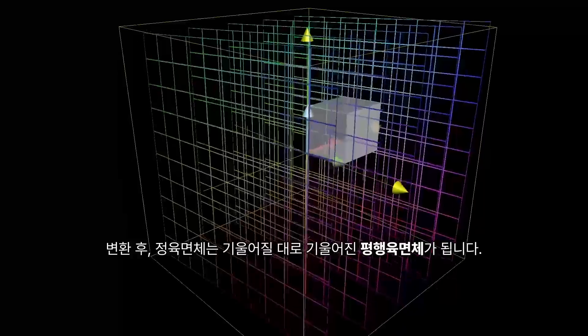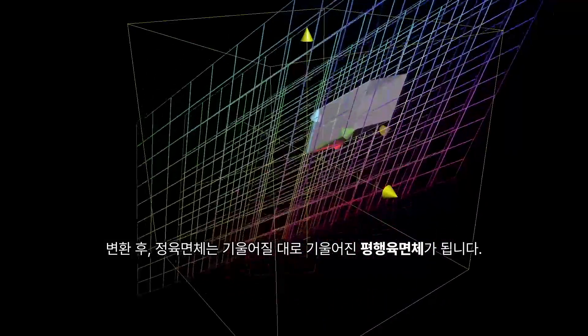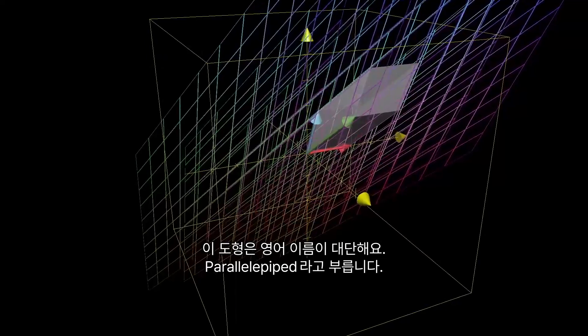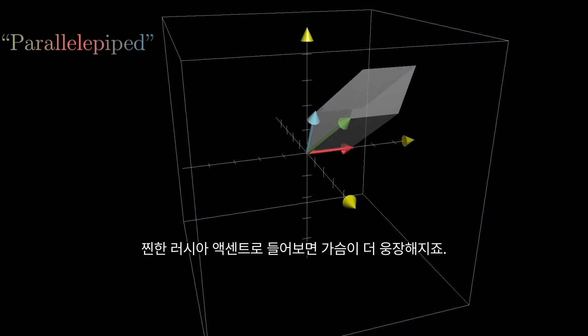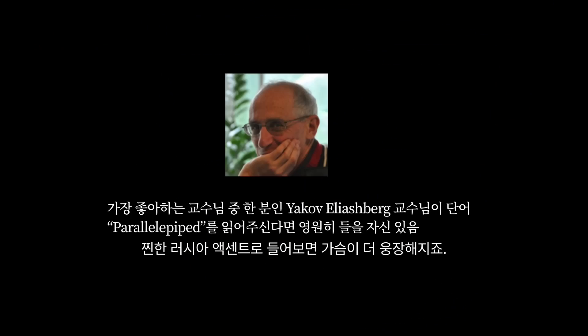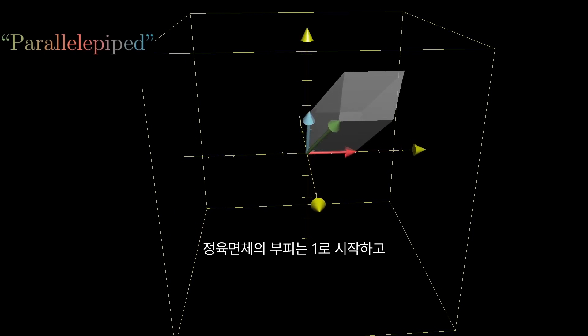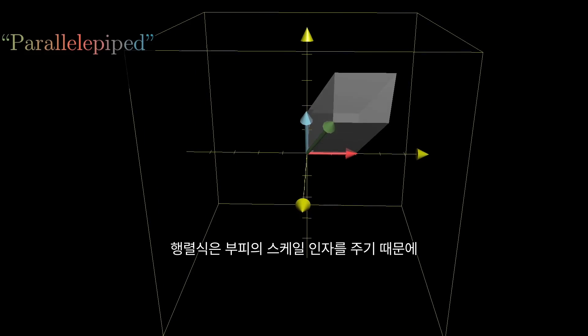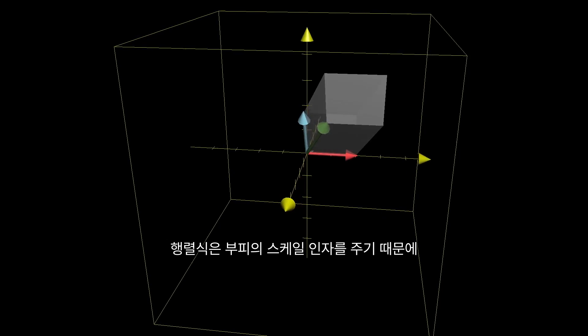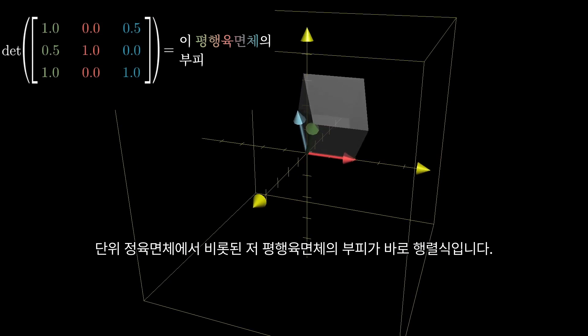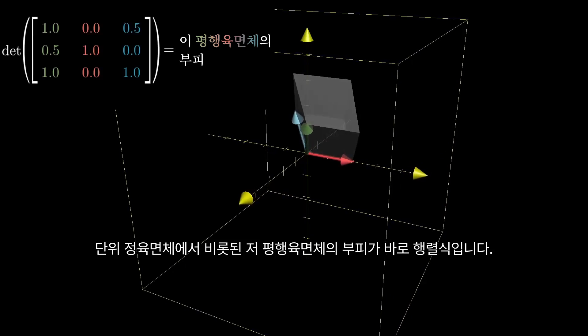After the transformation, that cube might get warped into some kind of slanty-slanty cube. This shape, by the way, has the best name ever, parallelopiped, a name that's made even more delightful when your professor has a nice thick Russian accent. Since this cube starts out with a volume of 1, and the determinant gives the factor by which any volume is scaled, you can think of the determinant simply as being the volume of that parallelopiped that the cube turns into.